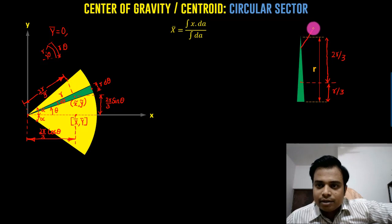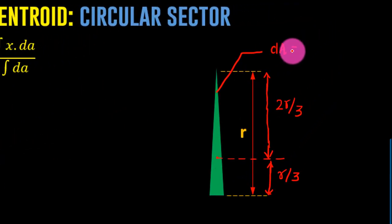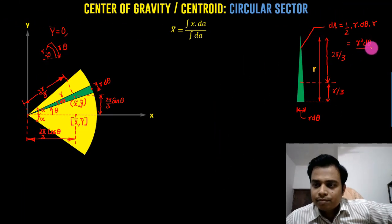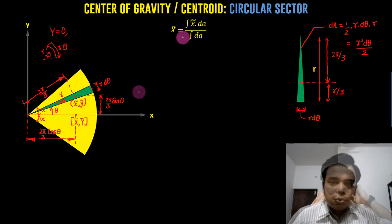Now before that, I need to calculate the area also. So this small little area of the triangular strip is going to be equal to area of triangle, that is half of base. Base is r dθ multiplied by this height that is r. So the area essentially works out as r squared dθ over 2.